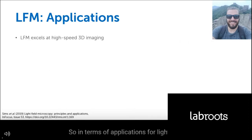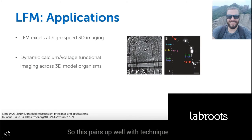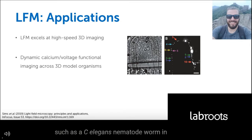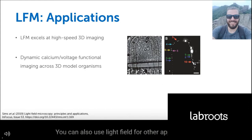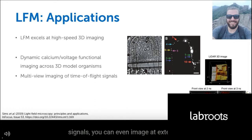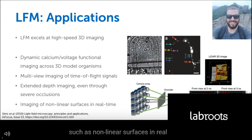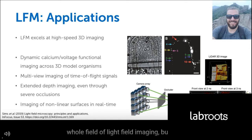The main application for light field microscopy is 3D volumetric imaging, especially at high speed. This pairs well with techniques requiring speed to capture dynamic samples, such as calcium or voltage imaging. You can capture functional signals from neural cells across an entire 3D model organism such as a C. elegans nematode worm, capturing data from the entire animal in 3D at high speed. Light field can also be used for multi-view imaging of time-of-flight signals, imaging at extended depths through occlusions, or imaging non-linear surfaces in real time.